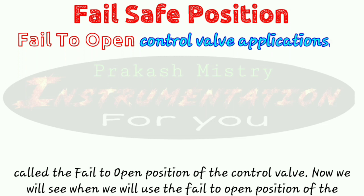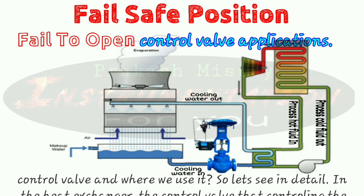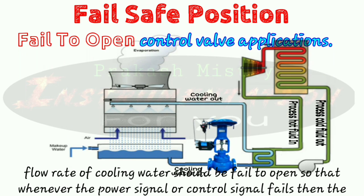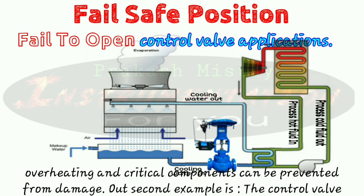Now we will see when and where we use the fail to open position of the control valve. In a heat exchanger, the control valve that controls the flow rate of the cooling water should be fail to open. So that whenever the power signal or control signal fails, the control valve enters the fully open position, and the remaining hot process fluid is cooled by the cooling water. Thus, overheating of critical components can be prevented from damage.